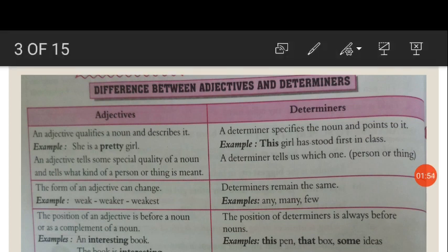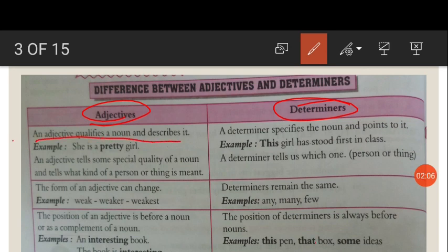Now let us understand the difference between an adjective and a determiner. An adjective qualifies a noun — it describes the noun, tells something more about it. A determiner, on the other hand, specifies the noun and points to it. So a determiner specifies whereas an adjective qualifies.